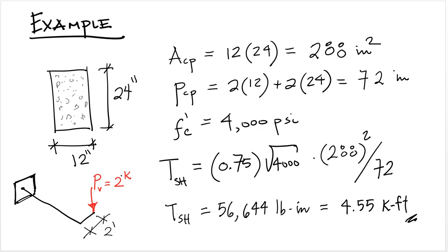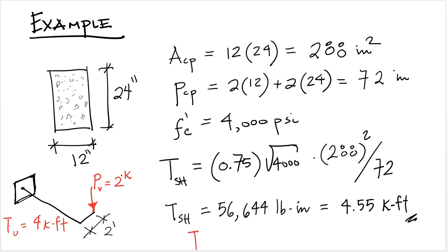So in this case, torsional effects can be neglected. And this cantilever beam with this load eccentric two feet would have to be designed for shear and bending moment, but it would automatically be able to resist distortion effects without any significant cracking or significant stresses that would necessitate additional reinforcement.